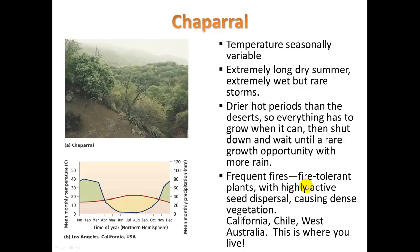Many species are fire tolerant — they have adapted to survive these fires. Their roots in the ground can stay active and vital. Many plants also have highly active seed dispersal techniques, making them great R strategists. They can send out seeds over a wide area to help repopulate areas that have experienced fire.